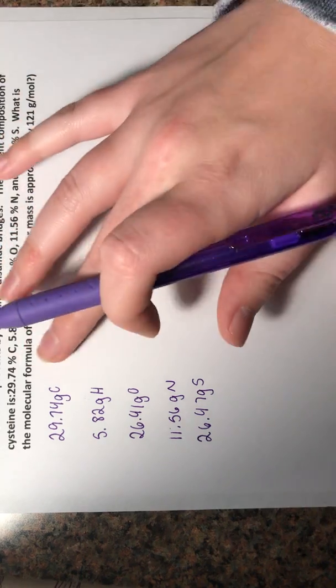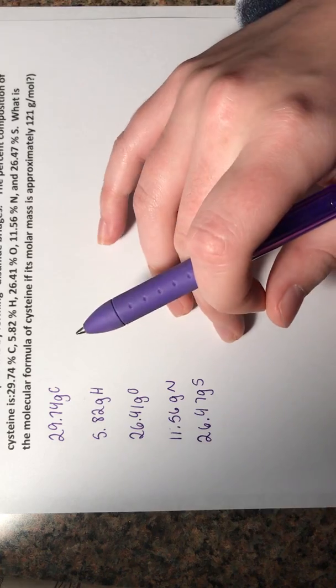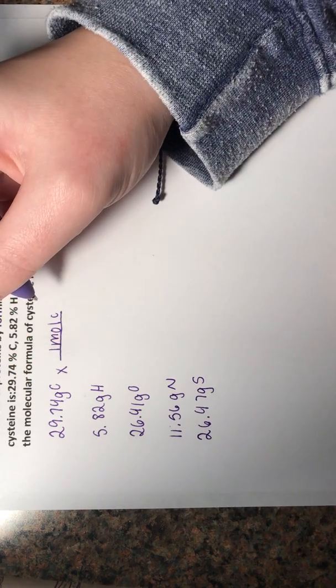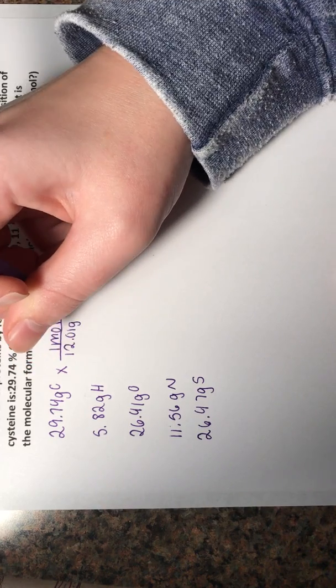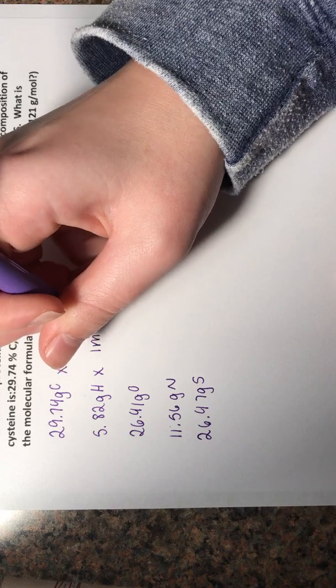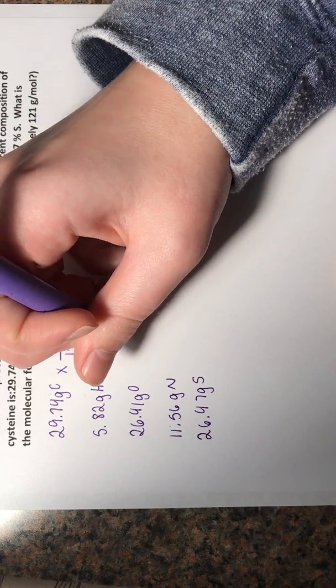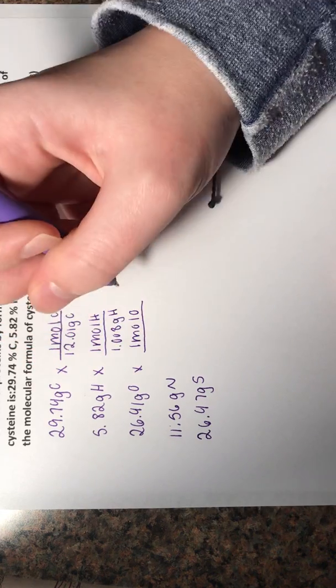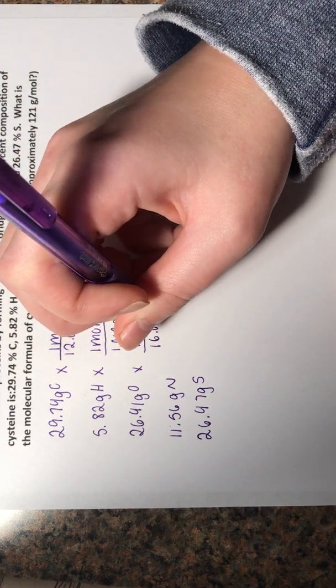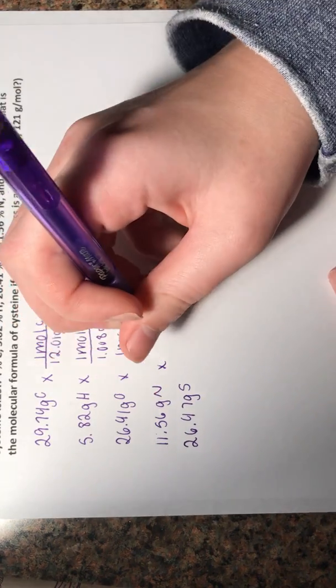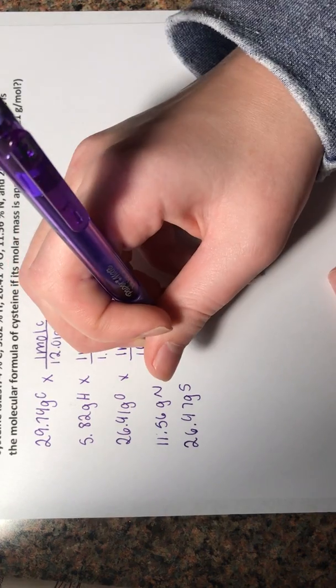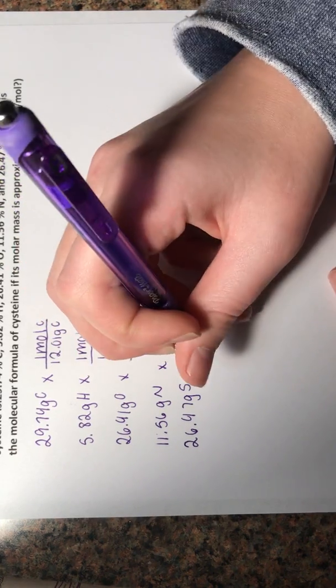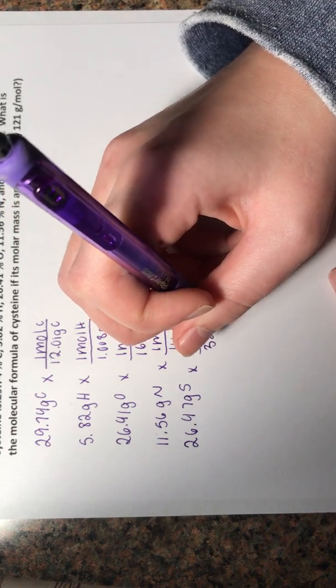Now we're going to be changing grams to moles. So we'll be dividing by their atomic mass. We'll have one mole of carbon over the atomic mass of carbon, which is 12.01 grams of carbon. And then we'll just be doing that for all of these. So one mole of hydrogen over 1.008 grams of hydrogen, and one mole of oxygen over 16.00 grams of oxygen, and then one mole of nitrogen over 14.01 grams of nitrogen, and then one mole of sulfur over 32.06 grams of sulfur.